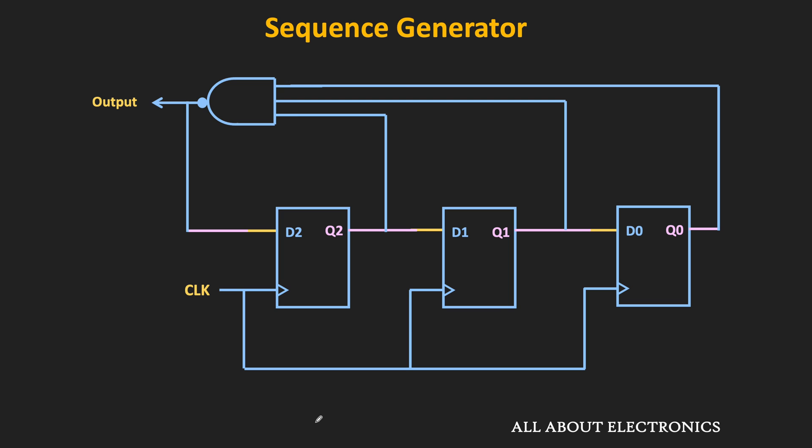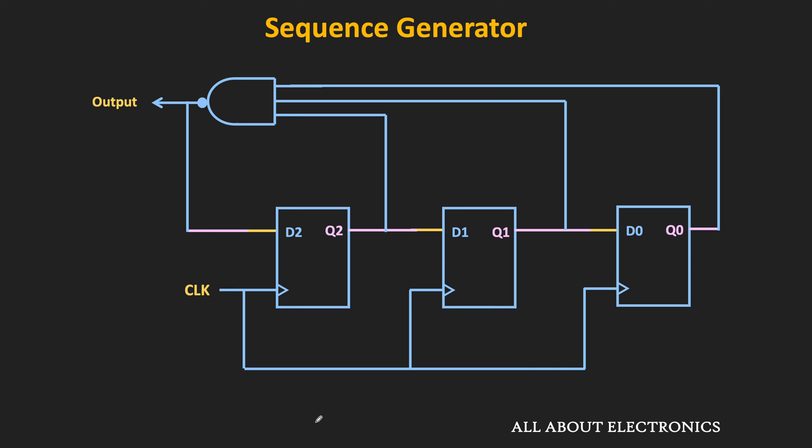We will require one NAND gate in the feedback, with Q0, Q1, and Q2 provided as inputs to the NAND gate, and the output of the NAND gate connected back to the D2 input. Initially, when we turn on the sequence generator, we can reset all the flip-flops with the help of the clear signal. Then after a couple of clock cycles, this circuit will start generating the required sequence.